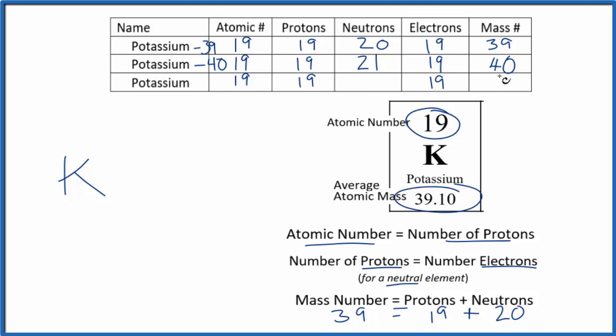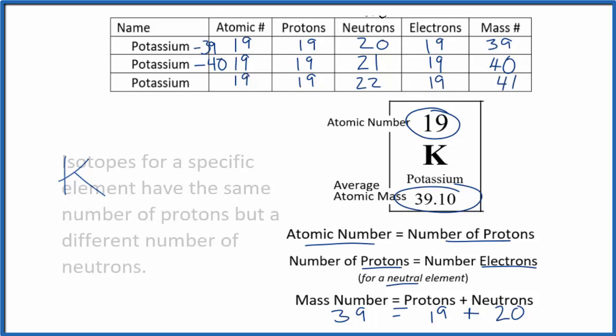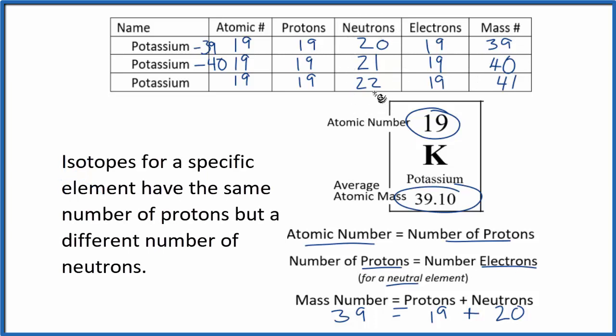And then potassium 41 is about 6-7% of potassium atoms. So 22 plus 19, that would give us 41. So these are the isotopes of potassium and really the big difference in isotopes. They have different neutrons. They do, though, have the same number of protons.